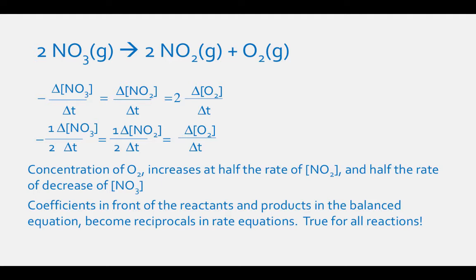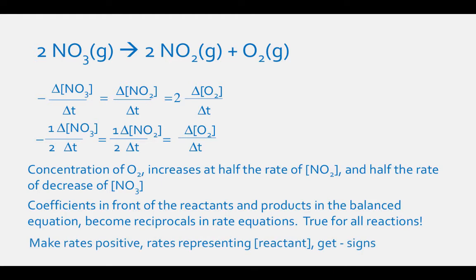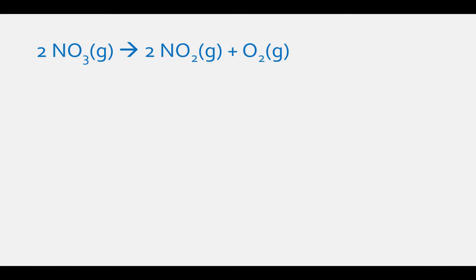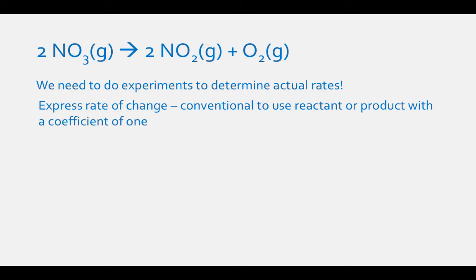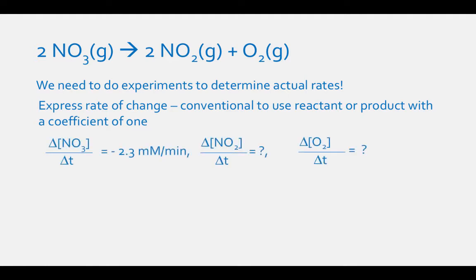This is true for all reactions. To give all the rates positive values, the rates representing decreasing reactant concentration get minus signs. To determine the actual rates of change, we need to do experiments. It is conventional to use the rate of change of the reactant or product with a coefficient of 1 in the balanced equation — in our example, this would be O2, but it doesn't have to be this product. What is the rate of change of the concentration of NO2 and O2 in our example reaction if delta concentration of NO3 per delta time is negative 2.3 millimolar per minute?